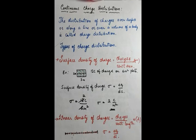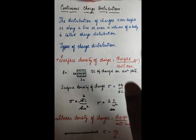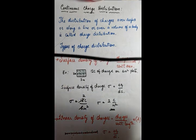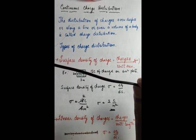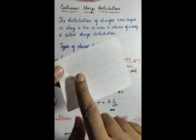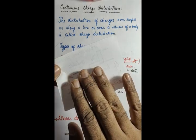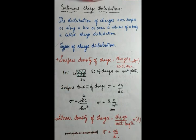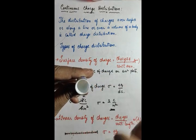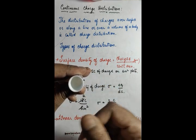In the next topic we are going to study continuous charge distribution. Charges can be along a length, charges can be on a surface, charges can be on a volume. Consider a wire — the charges are distributed linearly along the length. On a surface, the charges are distributed on the surface. If there are charges in a volume, we say the charges are distributed along the volume.